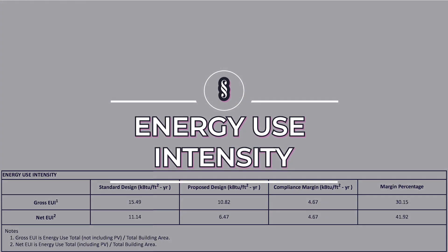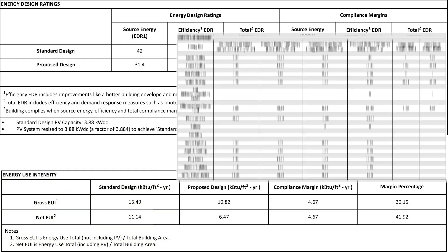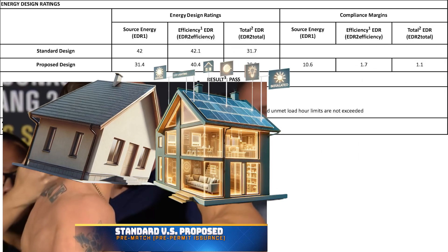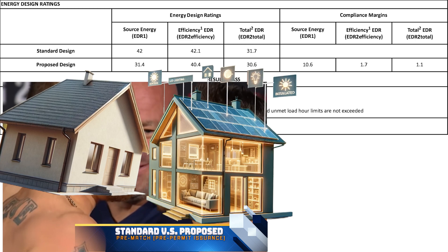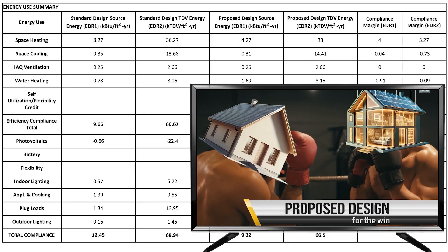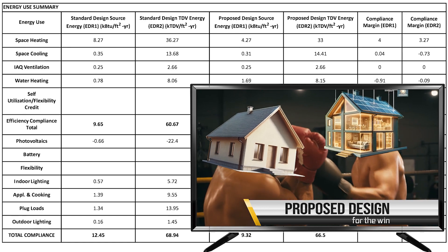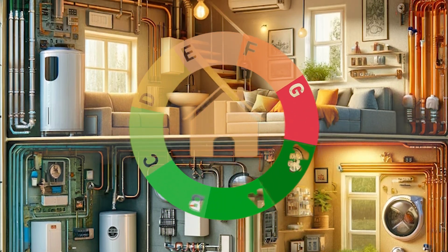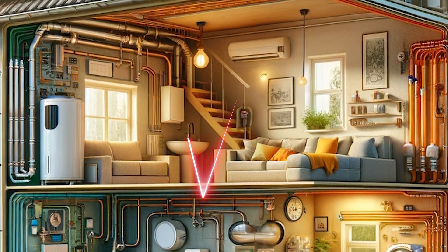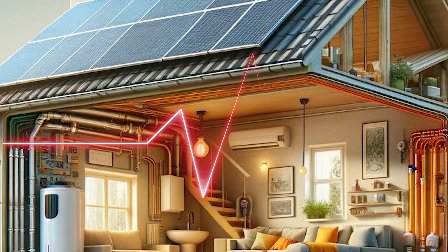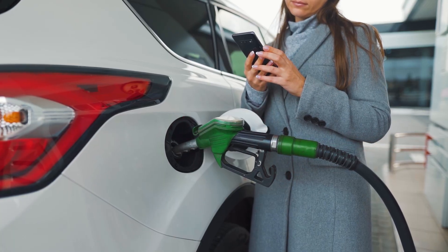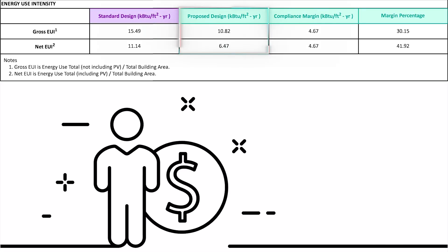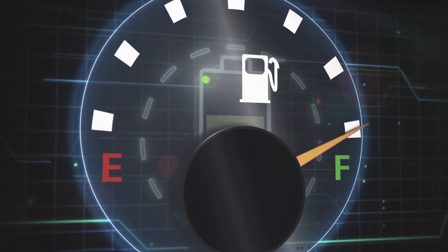The Energy Use Intensity Table is a detailed follow-up to both the Energy Design Ratings and the Energy Use Summary Tables. While the Energy Design Ratings Table sets up the comparison between the standard code minimum design and your proposed design, and the Energy Use Summary breaks down the anticipated energy use of different home components, this Energy Use Intensity Table focuses on the overall efficiency of the building. It's like looking at the overall health of your building — measuring how much energy will be used per square foot, similar to evaluating your car's overall fuel efficiency. The lower the energy usage per square foot in the proposed design, the more efficient your building is, just like a car that uses less gas per mile.